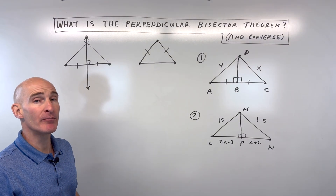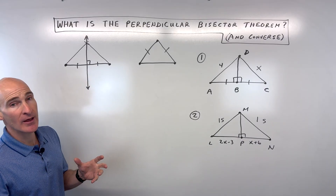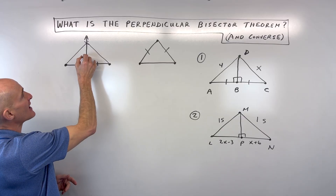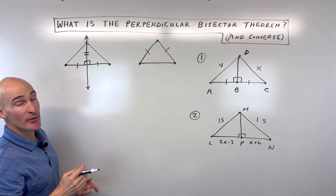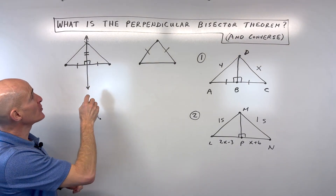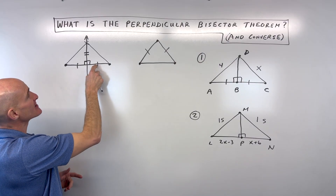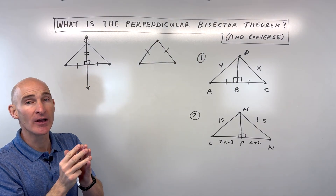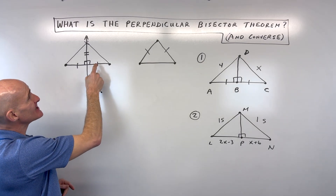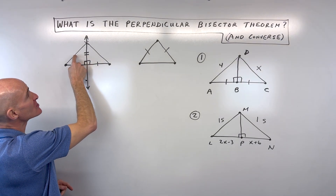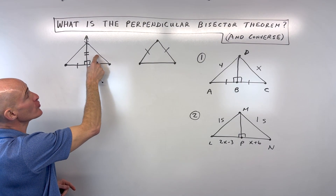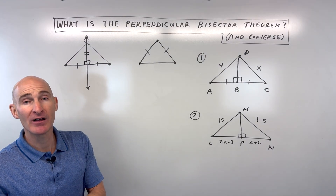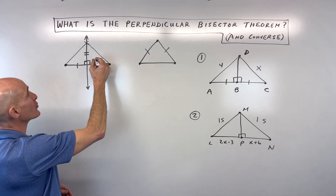You learned in previous lessons when you proved triangles congruent — if this is a right angle, this has to be a right angle too. This side is shared between the two triangles by the reflexive property. You have side-angle-side, which is enough to prove the two triangles are congruent. By CPCTC, the corresponding parts of congruent triangles are congruent. If you fold this, the two lengths match up because the triangles are congruent.